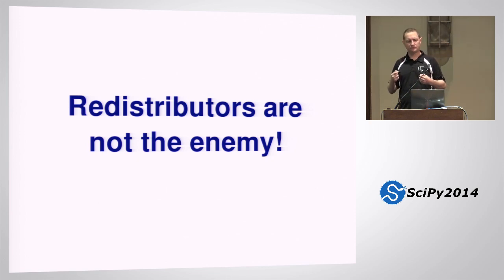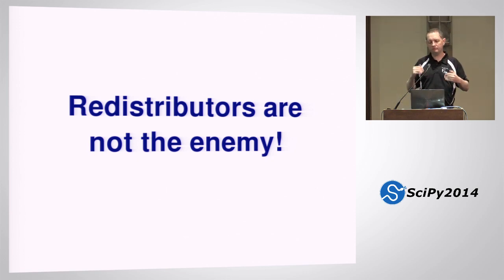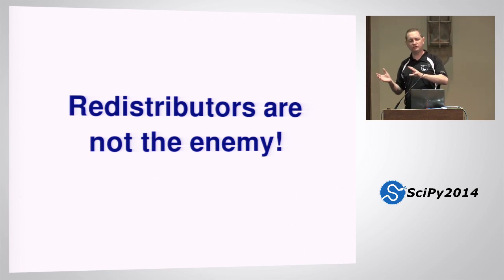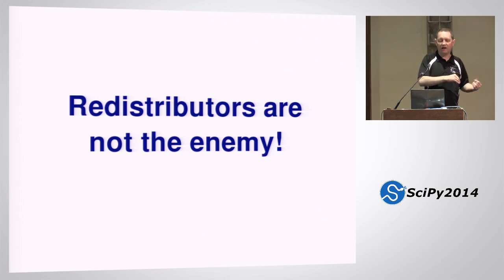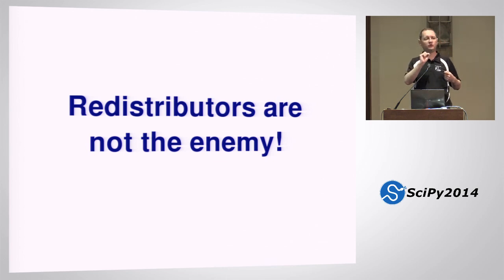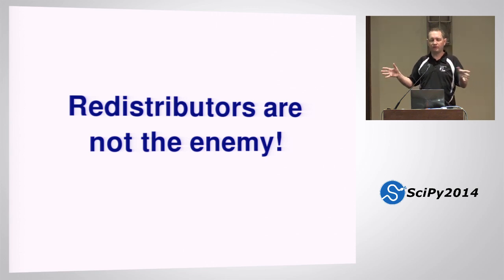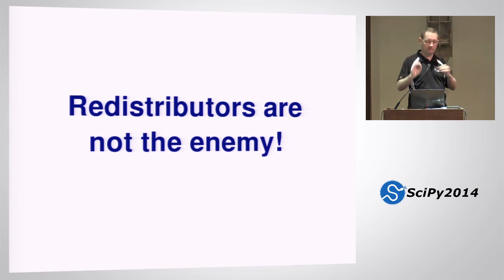To try and improve this, we really need to focus on the user experience — providing users what they want, when they want, how they want. What this basically means is that if users have an existing redistributor that they like, that kind of becomes a design constraint on us. We need to figure out how to get them the software they want through the channel they already prefer. But in cases where users don't have a preferred redistributor, we have a bit more freedom — we can say, hey, here's a community preferred default distro that you can use.